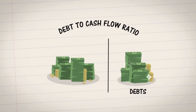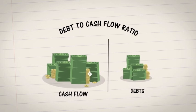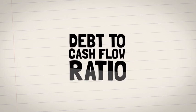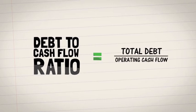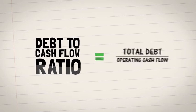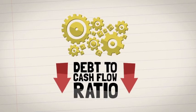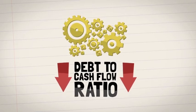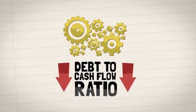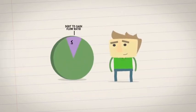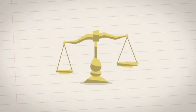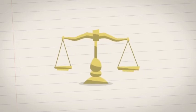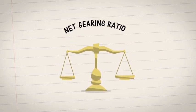The fifth ratio you should know is the debt to cash flow ratio. This measures the company's debts against its operating cash flow. To calculate this, take the company's total debt and divide it by operating cash flow. The lower the ratio, the better the company's ability to finance their operations. Any ratio less than or equal to three is considered good.